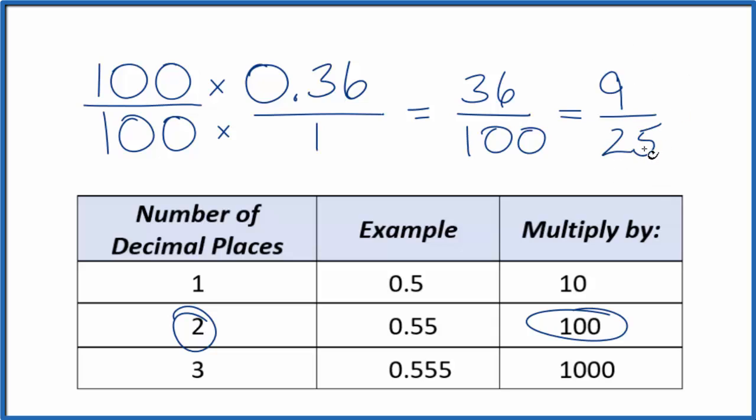So the simplest form here for the decimal 0.36 is the fraction 9/25. If you divide 9 by 25, or 36 by 100, you'll get 0.36.